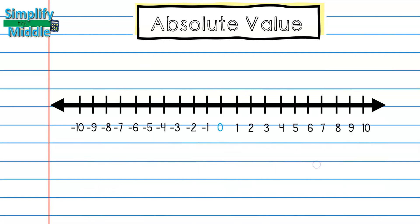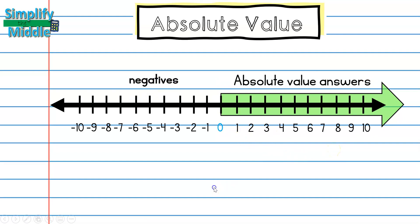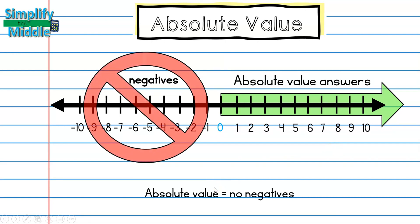Because I'm looking at distance, my absolute value answers must always be on the positive or zero side of the number line. I cannot have negatives as an answer for absolute value.